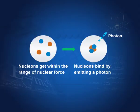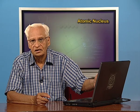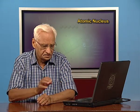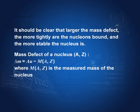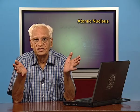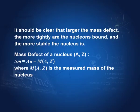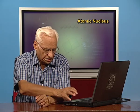This difference is known as mass defect. The larger the mass defect, the more solidly the nucleons are bound together, and therefore the more stable the nucleus. The mass defect of a nucleus A, Z — where A is the mass number and Z is the atomic number — is defined as Δm = A·u minus the measured mass of the nucleus. Larger mass defect means more tightly bound nucleons and a more stable nucleus.